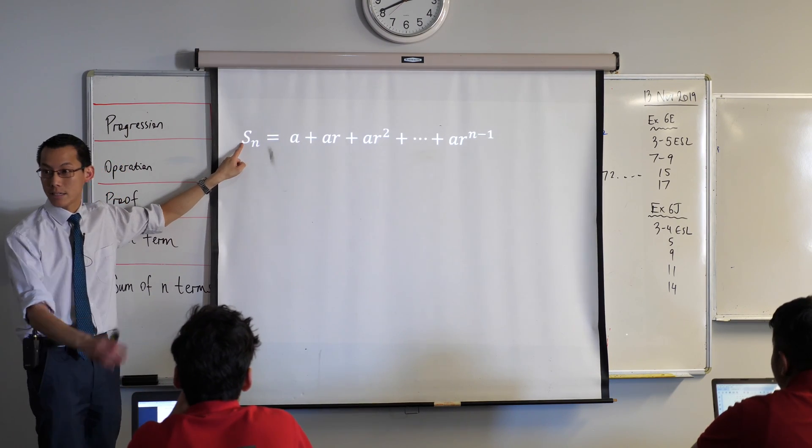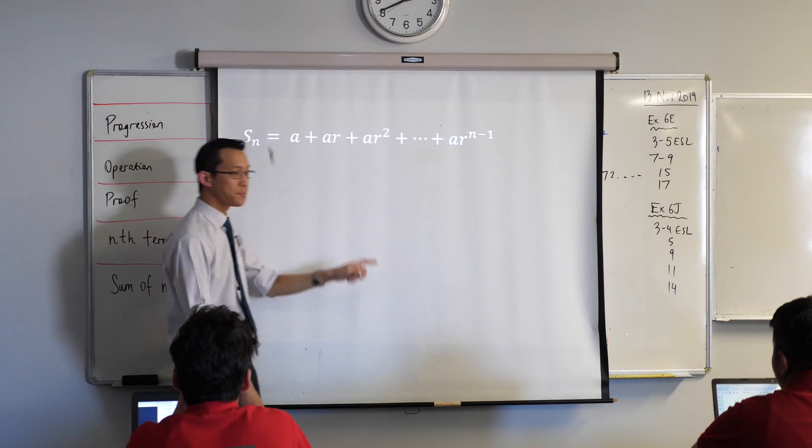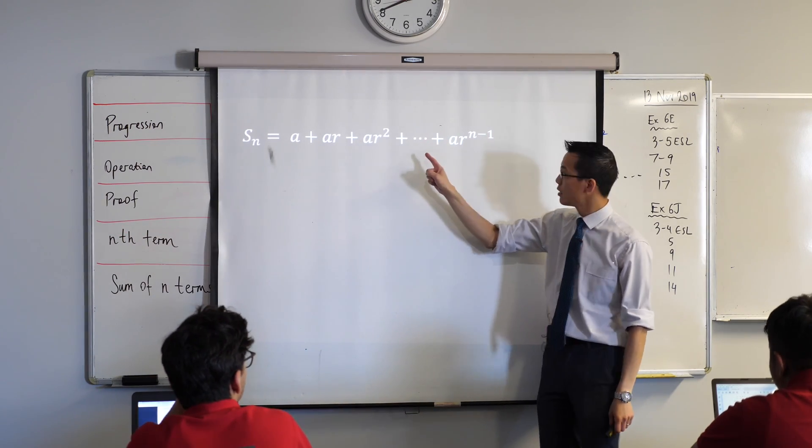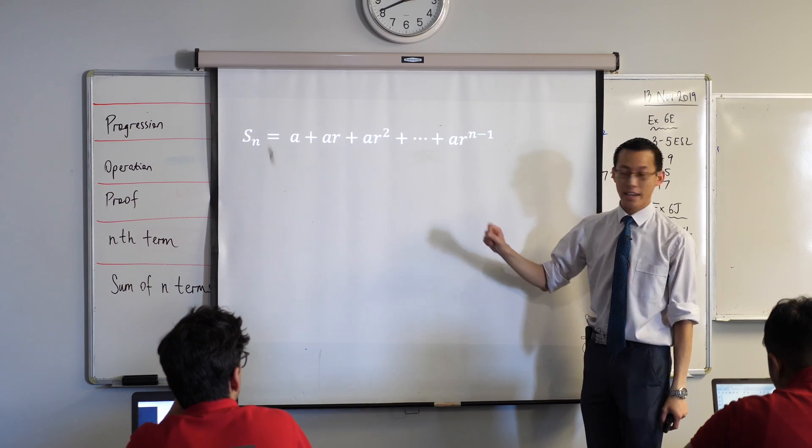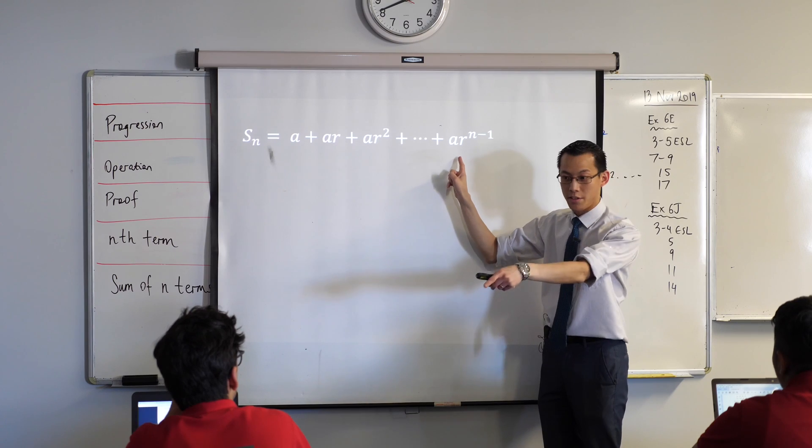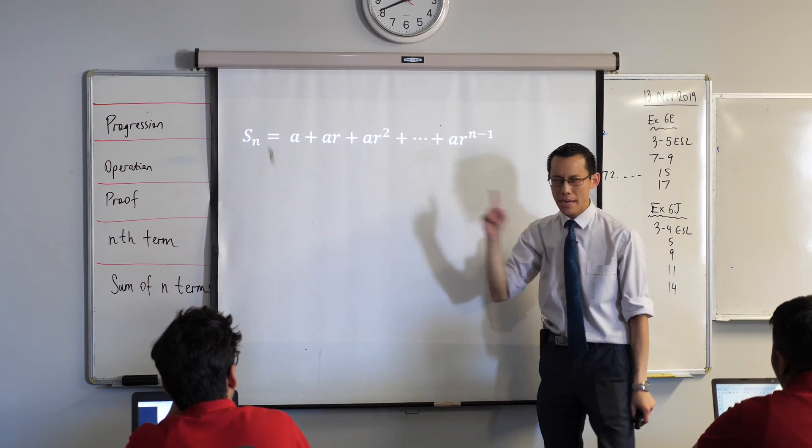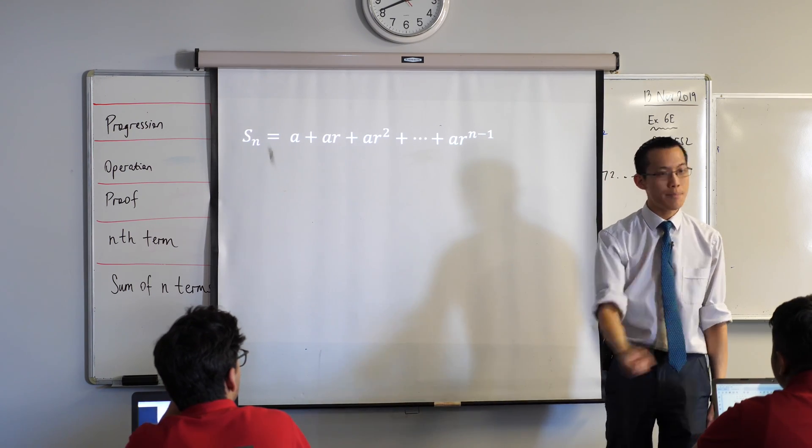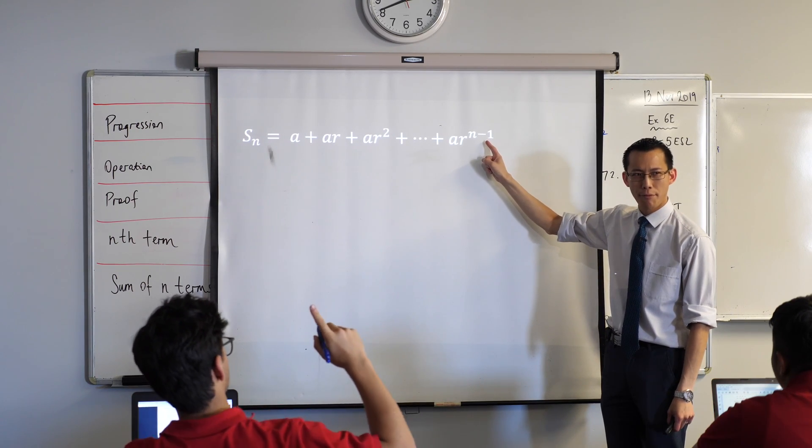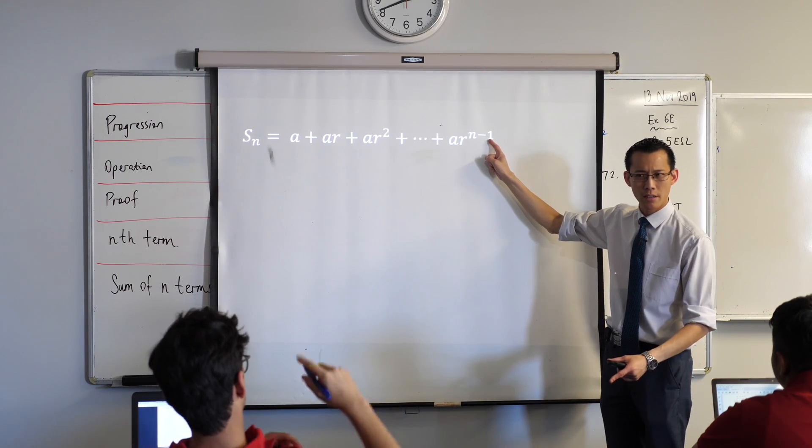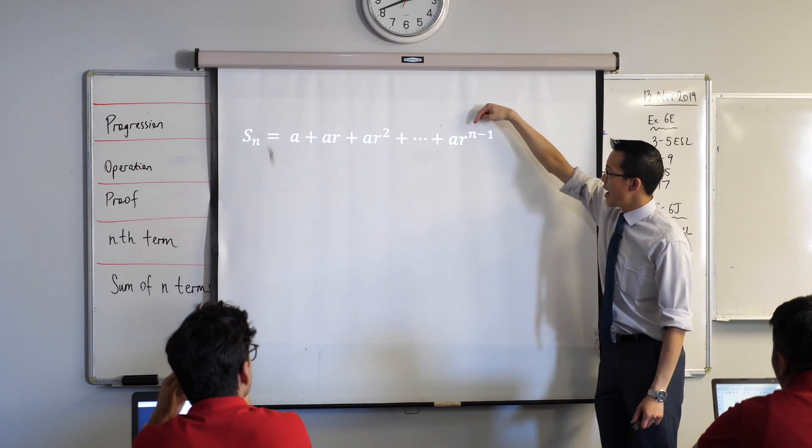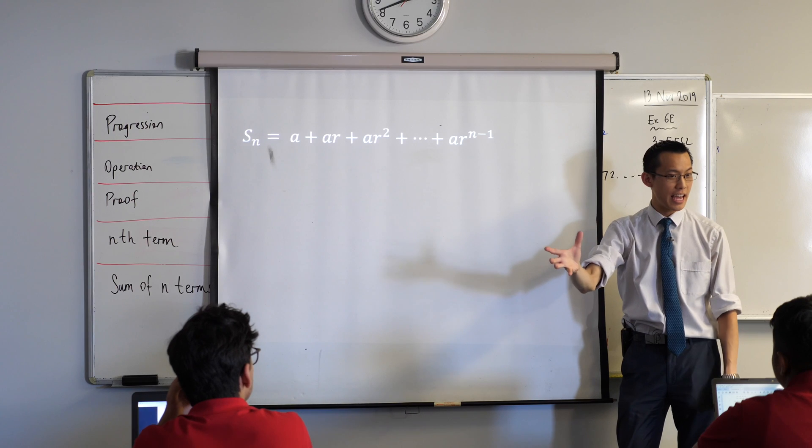Here's my first question. I've got my dot dot dot which indicates some number of terms in here. For reasons that become clear in a second I actually want not just the last term but I want to write down the term before it. What would be the term immediately before this one? Exactly, ar^(n-2).